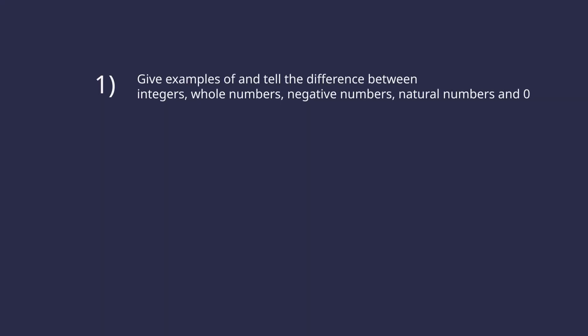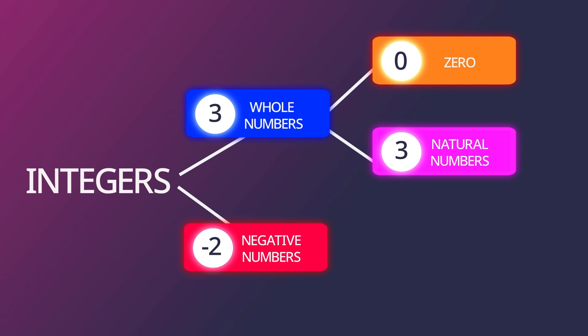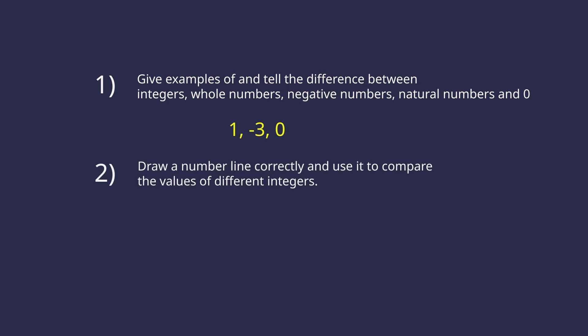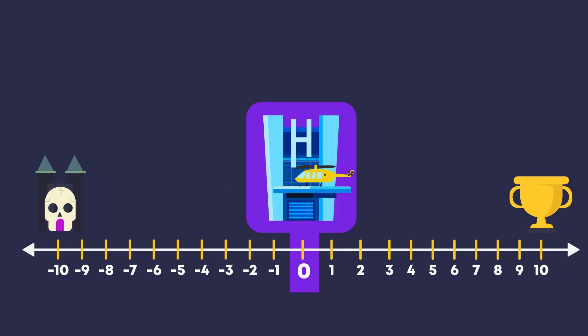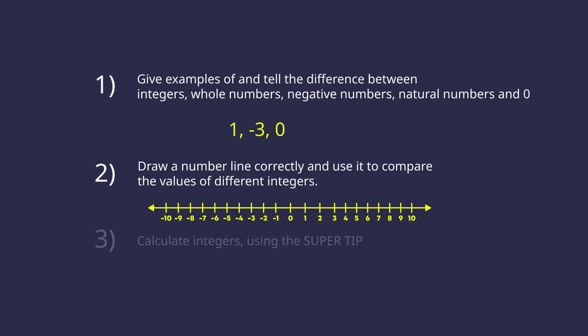Now that we have wrapped up the basics of integers, you should be able to: Number one, give examples of and tell the difference between integers, whole numbers, negative numbers, natural numbers and zero. Number two, draw a number line correctly and use it to compare the values of different integers. Number three, calculate integers using the super tip of the day.